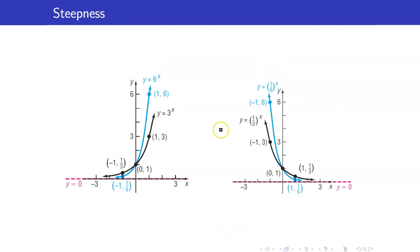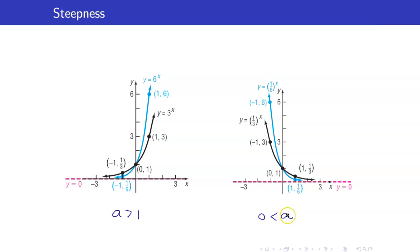Notice also the steepness of your exponential function. If a is greater than 1, the bigger your a is, the steeper your exponential function is. Whereas if a is between 0 and 1, the smaller is your base — 1/6 is smaller than 1/3 — then the steeper the graph is.